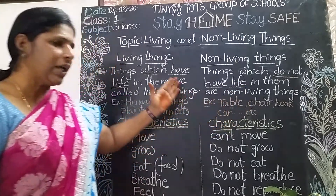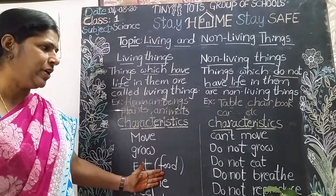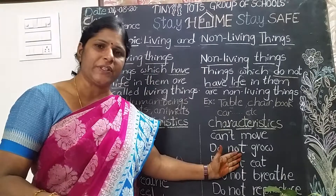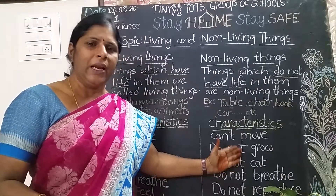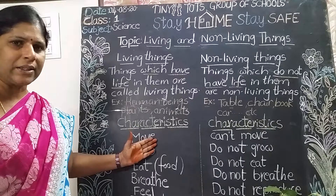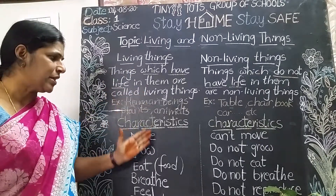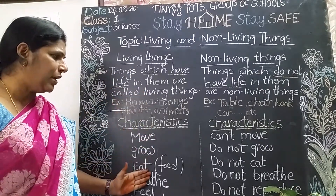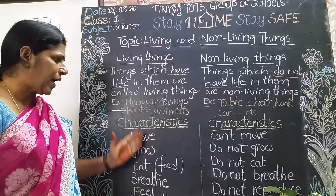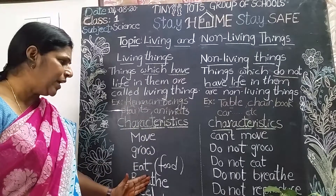Is it clear? The things which have life in them are called living things; the things which do not have life in them are called non-living things. What are the characteristic features of living things and non-living things? Let us discuss about these characters.